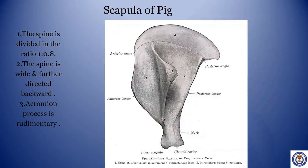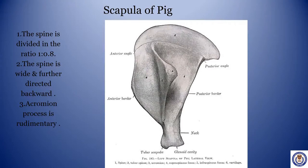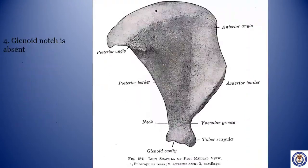Scapula of pig. The spine divides in the ratio of 1 to 0.8. The spine is wide and further directed backward. Acromion process is rudimentary. Glenoid notch is absent.